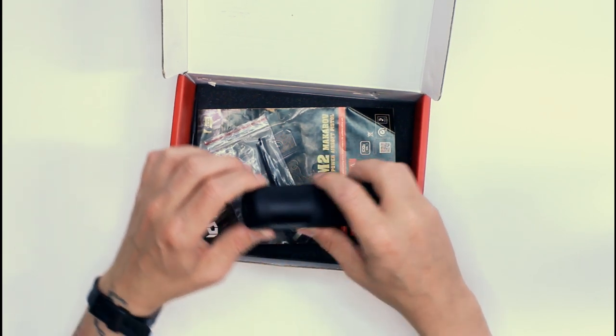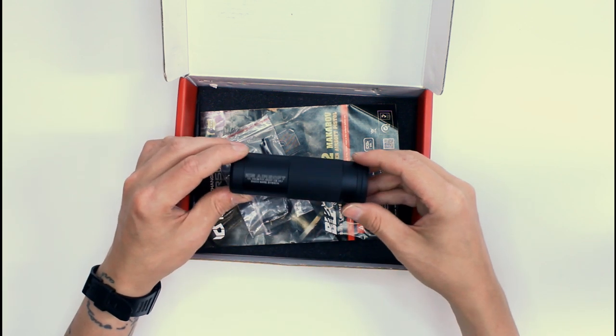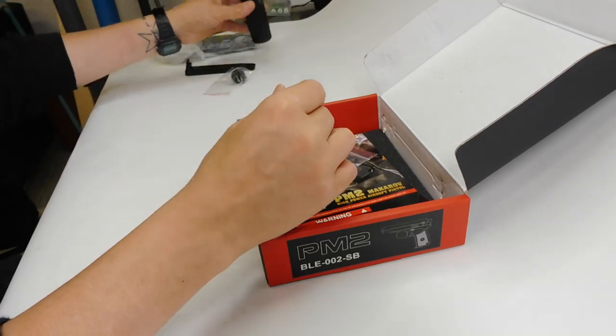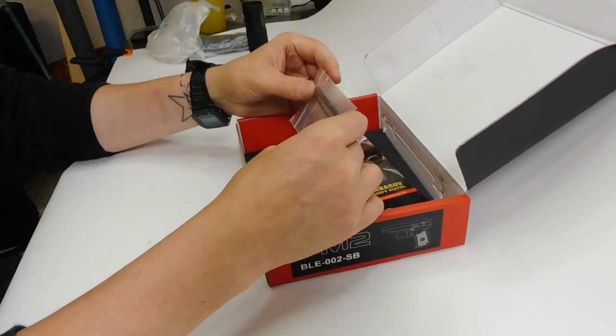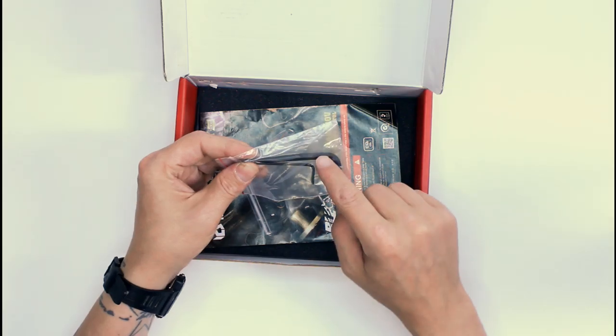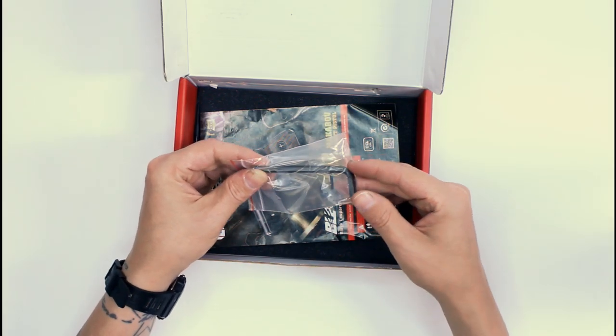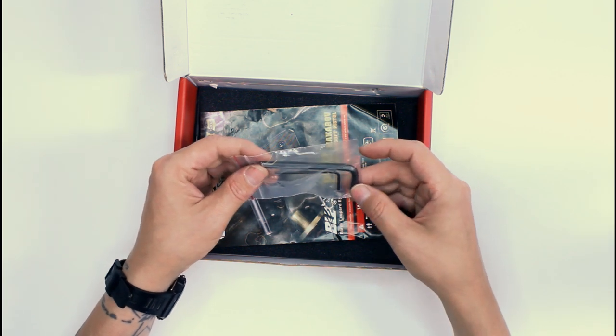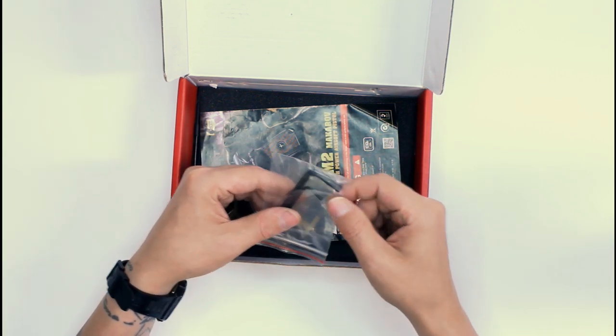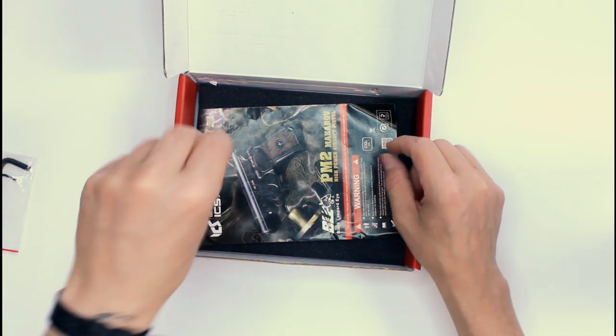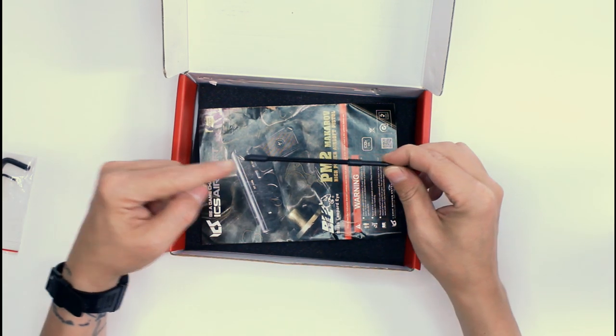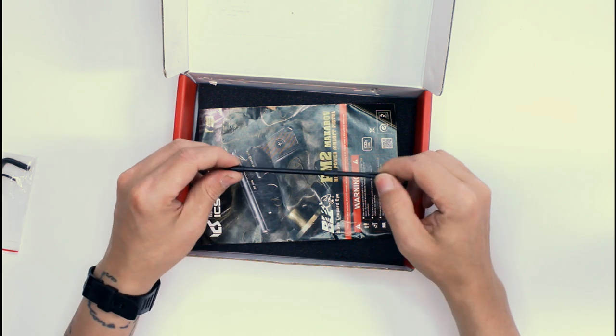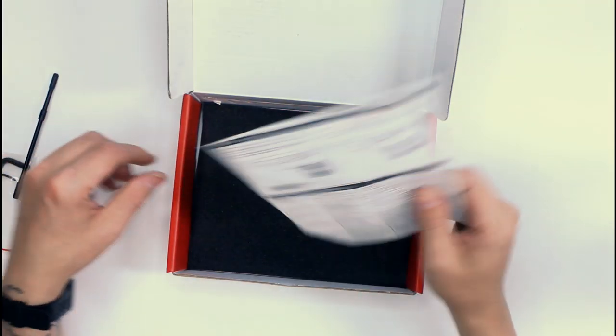Also in here are two allen keys. The first one is actually used to insert the CO2 capsule into the gun. The second one is to adjust the hop-up. You also get a tiny little unjamming and cleaning rod, which is always useful.